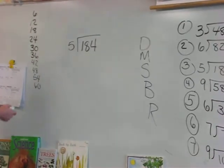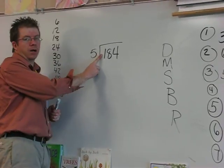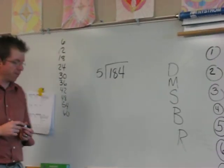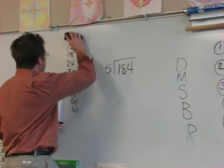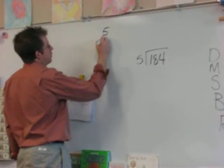Alright, let's go through it. First we divide. Does five go into one? No. So you go to 18. How many times does five go into 18? Three. Three times. Let's say I don't remember all of my multiplication facts. I'm going to do my fives over here on the side real quick.